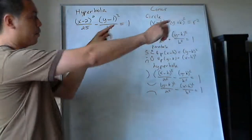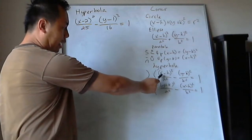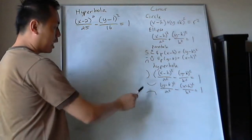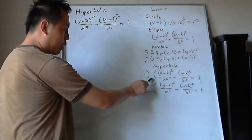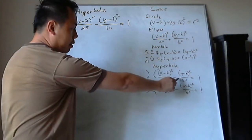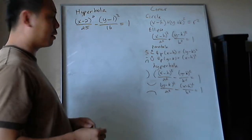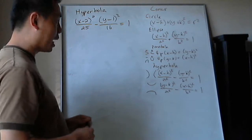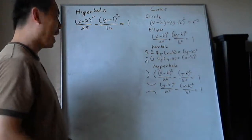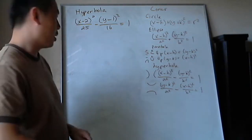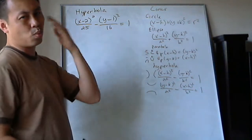You can have a hyperbola opening left and right or opening up and down, as illustrated here. The way I remember it: if X is first, it opens left and right; if Y is first, it opens up and down. It's always a minus sign between the two terms — not two minuses. If you have minus X and minus Y, it's not a hyperbola — that's one way to trick you. So X minus Y opens left and right; Y minus X opens up and down.